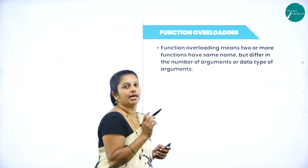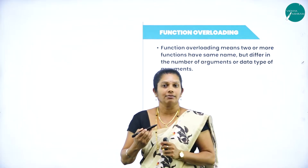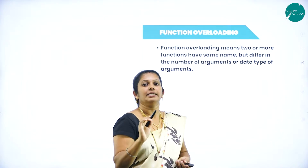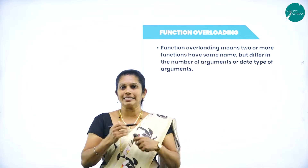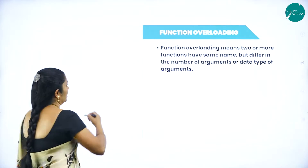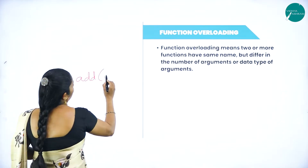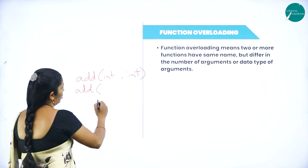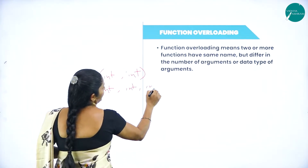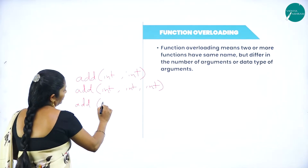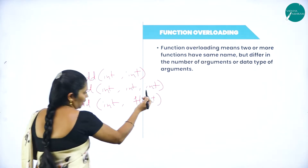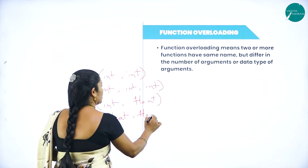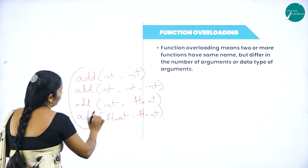Function overloading means two or more function names are the same but differ in the number of arguments or the data type of the arguments. For example, consider a function add() with two int arguments, then another add() with three int arguments: int, int, int. One more add() with float, float, float arguments — in all cases the function name is add.